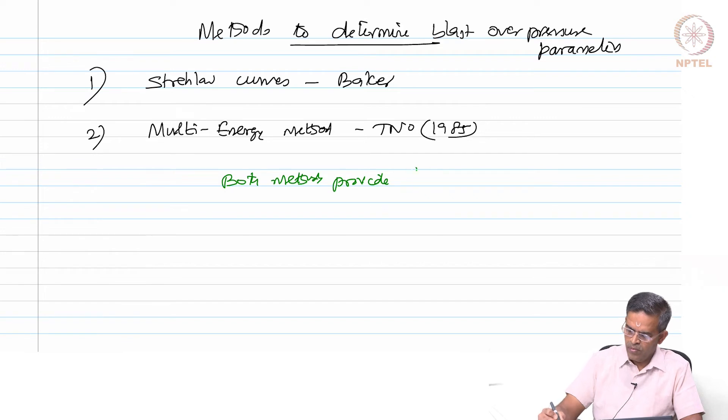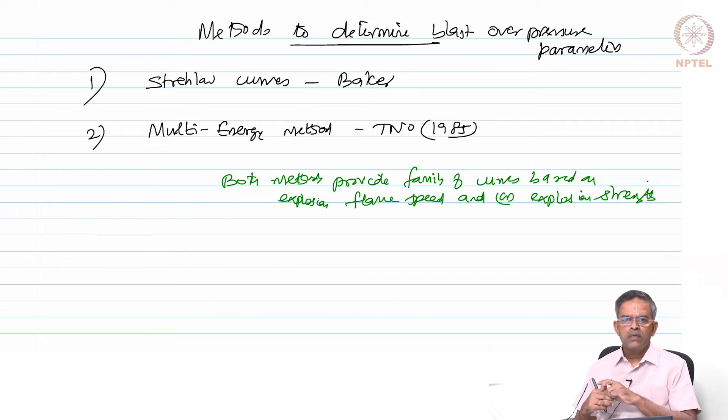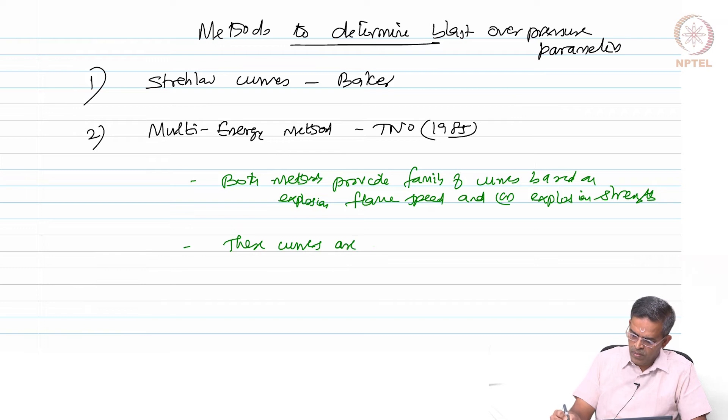Both methods provide family of curves based on the explosion strength, the flame speed and explosion strength. These curves are used to select the dimensionless parameters, which are then unscaled to determine the actual overpressure. So these curves are helpful to determine the actual overpressure.